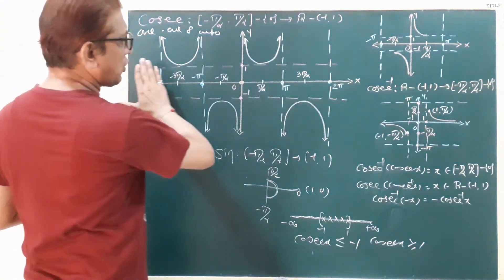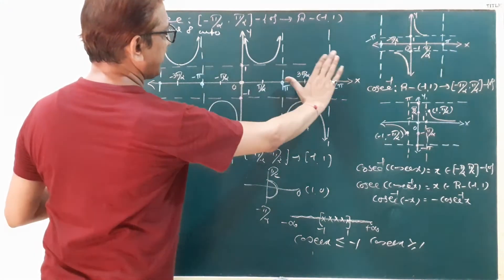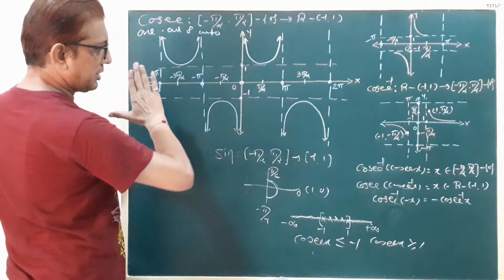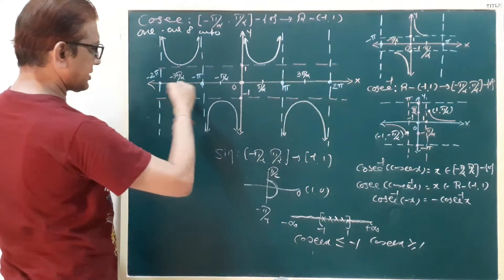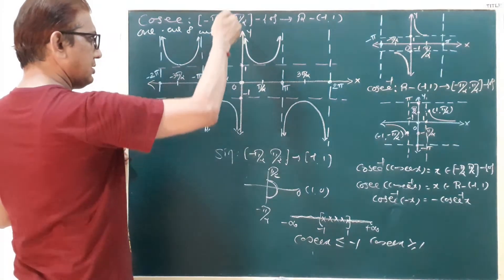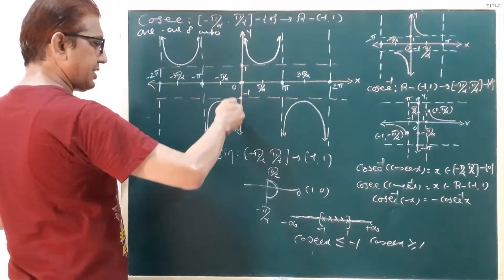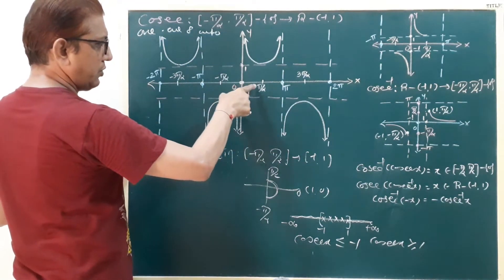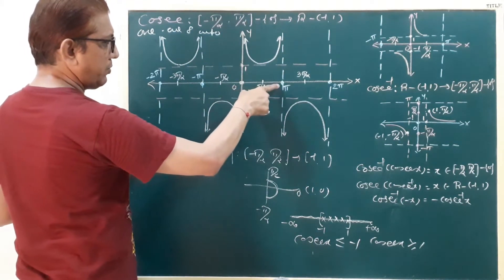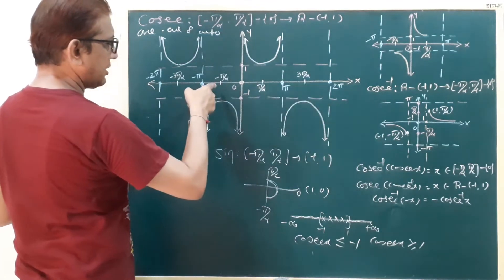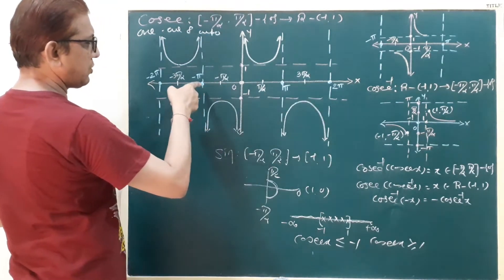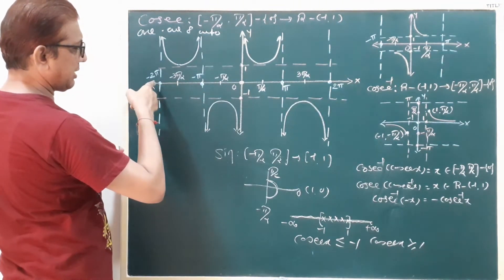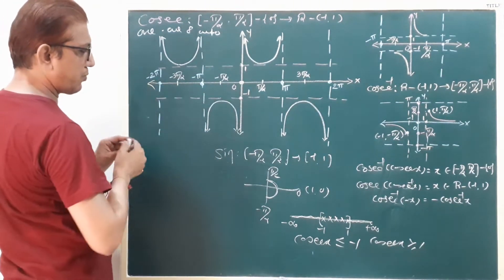Now here we draw the cosecant function graph. This is the x-axis and this is the y-axis. Here: 0, pi by 2, pi, 2 pi on the positive side, and minus pi by 2, minus pi, minus 3 pi by 2, minus 2 pi on the negative side.